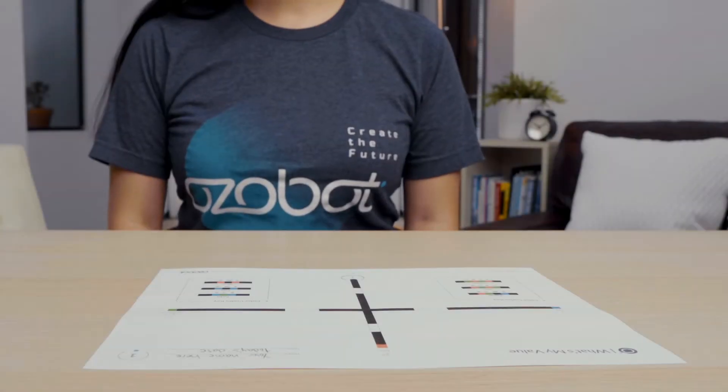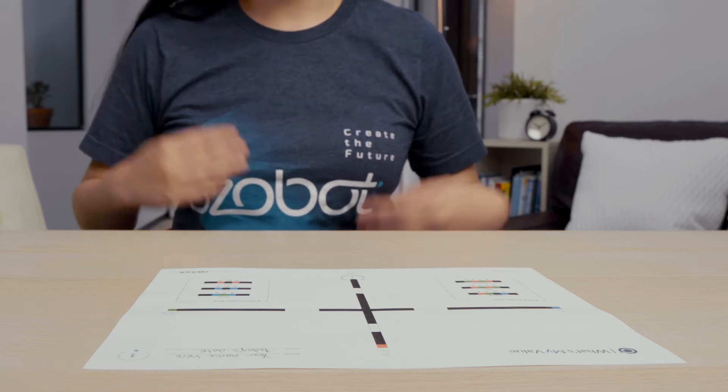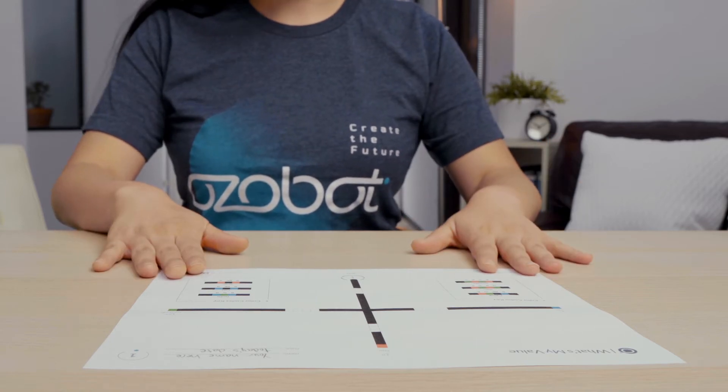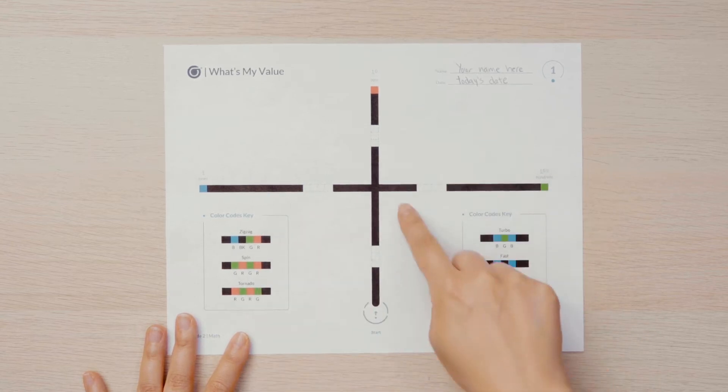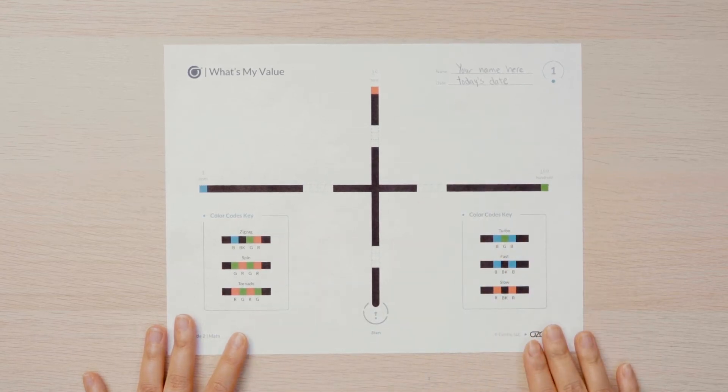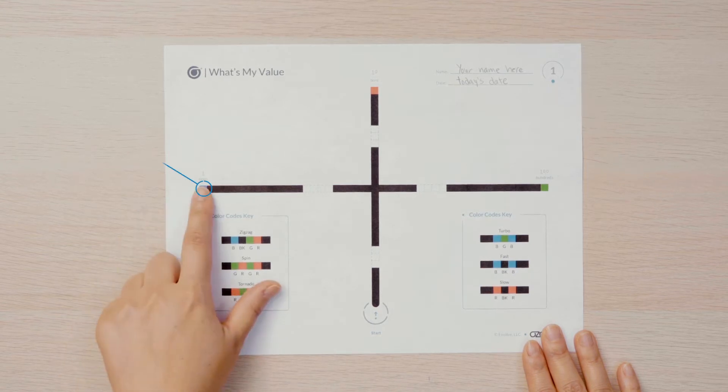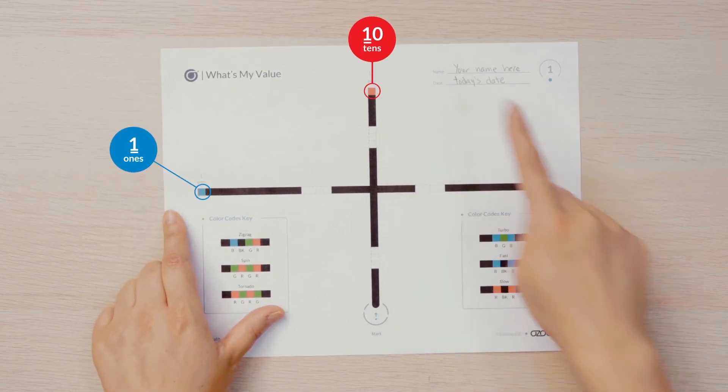Before the fun can begin, you need to complete the pathways on the What's My Value map. On the map, you will see that there are three possible pathways for your Ozobot to follow. It will randomly choose a place value: ones, tens, or hundreds.